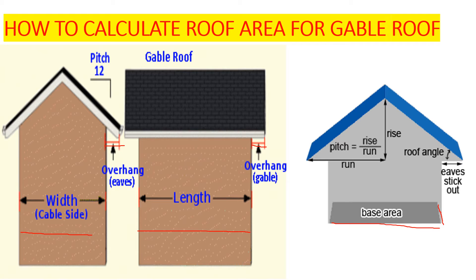Looking at this plan, we have the eaves striking outside, and then we have the rise and the run. We are going to use the rise and the run — not the pitch. But if you want the pitch, it is the rise divided by the run. We also have the roof angle on this side. Now let's see how we are going to proceed and calculate the roof area.